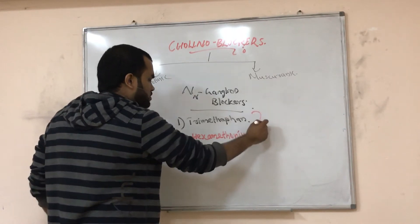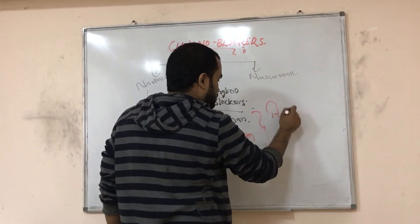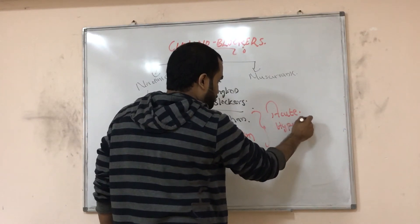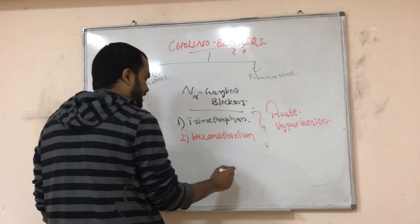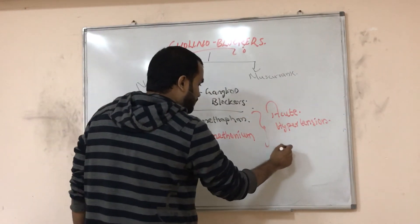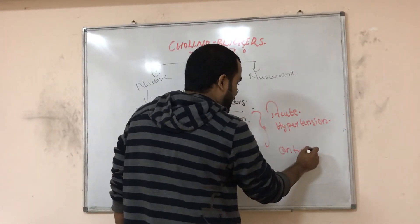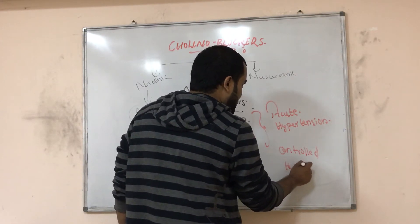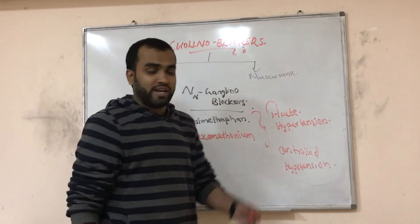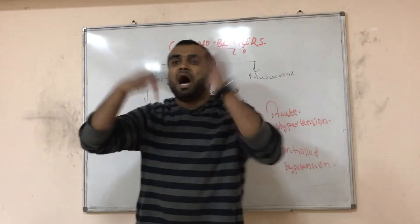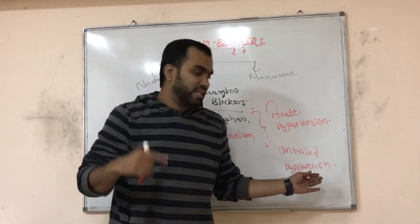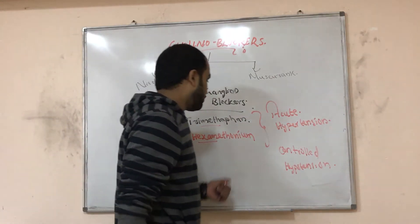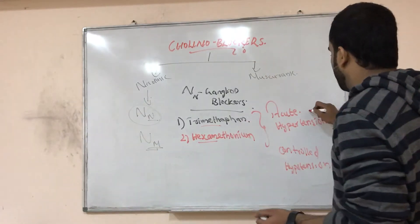So what are the uses of ganglion blockers? They are used in acute hypertension and in controlled hypotension. Controlled hypotension means that while doing surgery, the surgeon wants to reduce bleeding. If they cut an artery, there will be high bleeding, so to control the bleeding you have to reduce the blood pressure. At that time we use ganglion blockers — trimethaphan and hexamethonium.